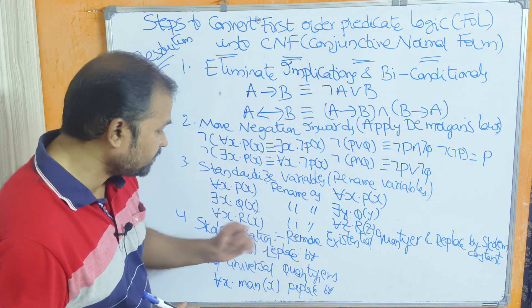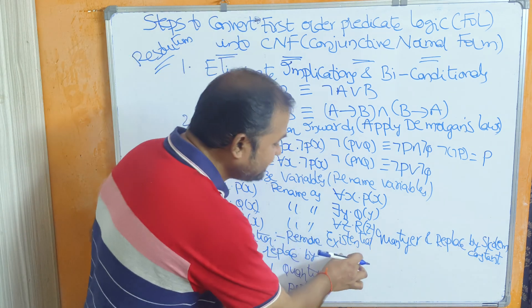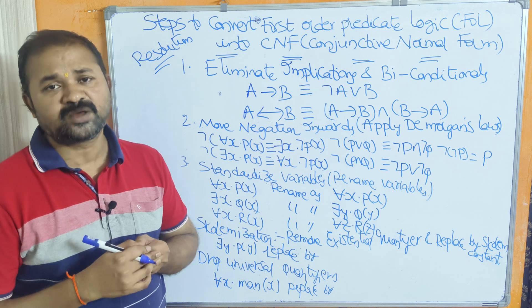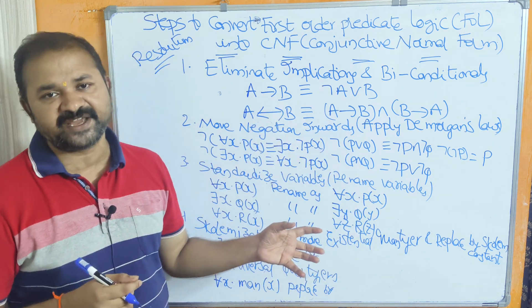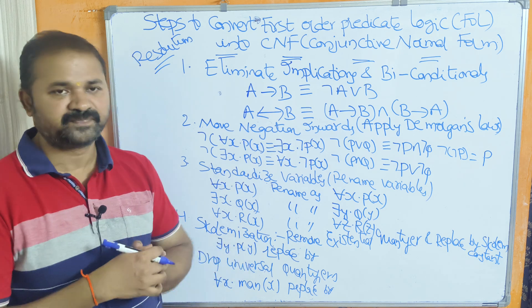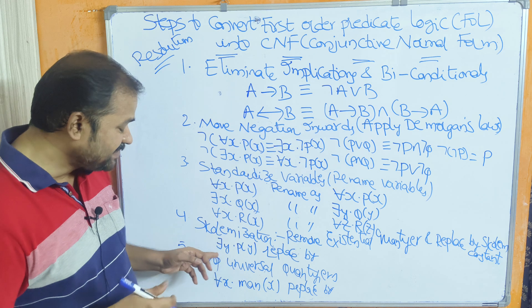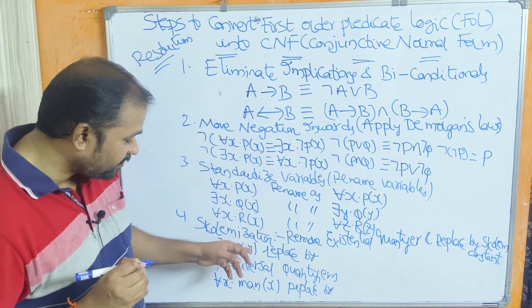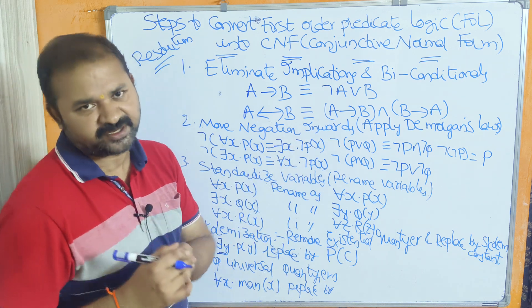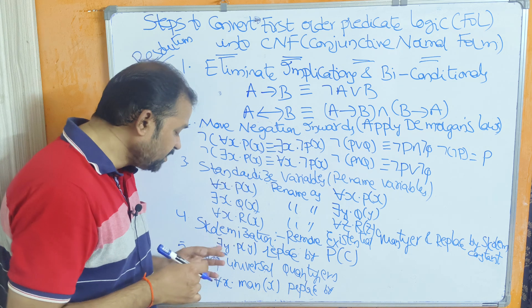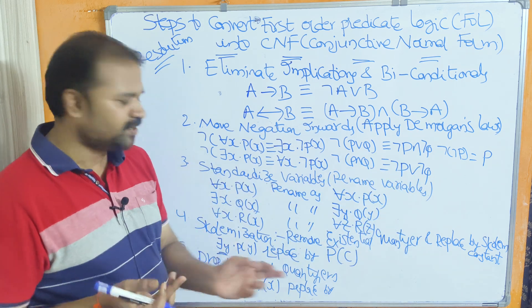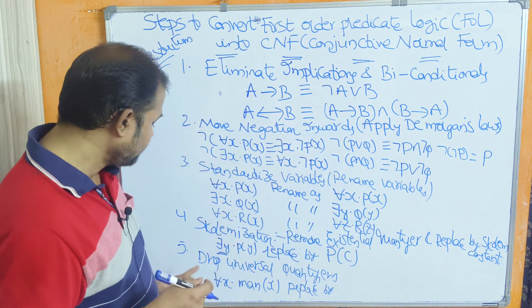Step four: Skolemization. Skolemization means we remove the existential quantifier and replace the variable with a Skolem constant. For example, there exists y P(y) becomes P(c), where c is the Skolem constant. It may be any variable a, b, c, or d — it is our choice. This can also be called a Skolem function.